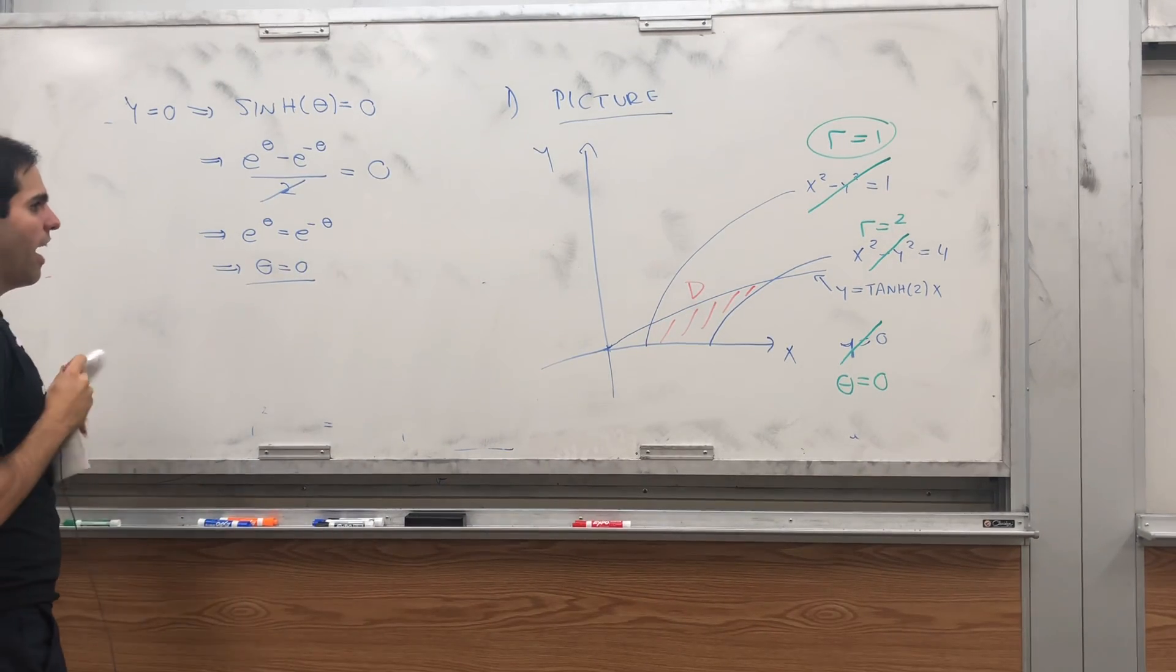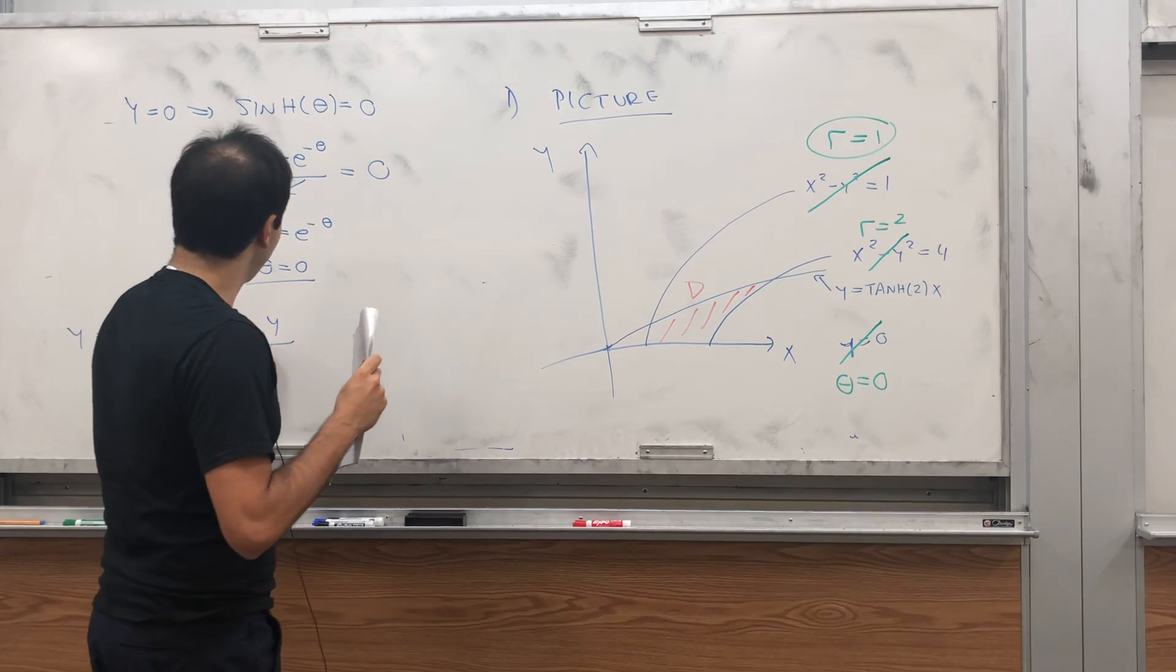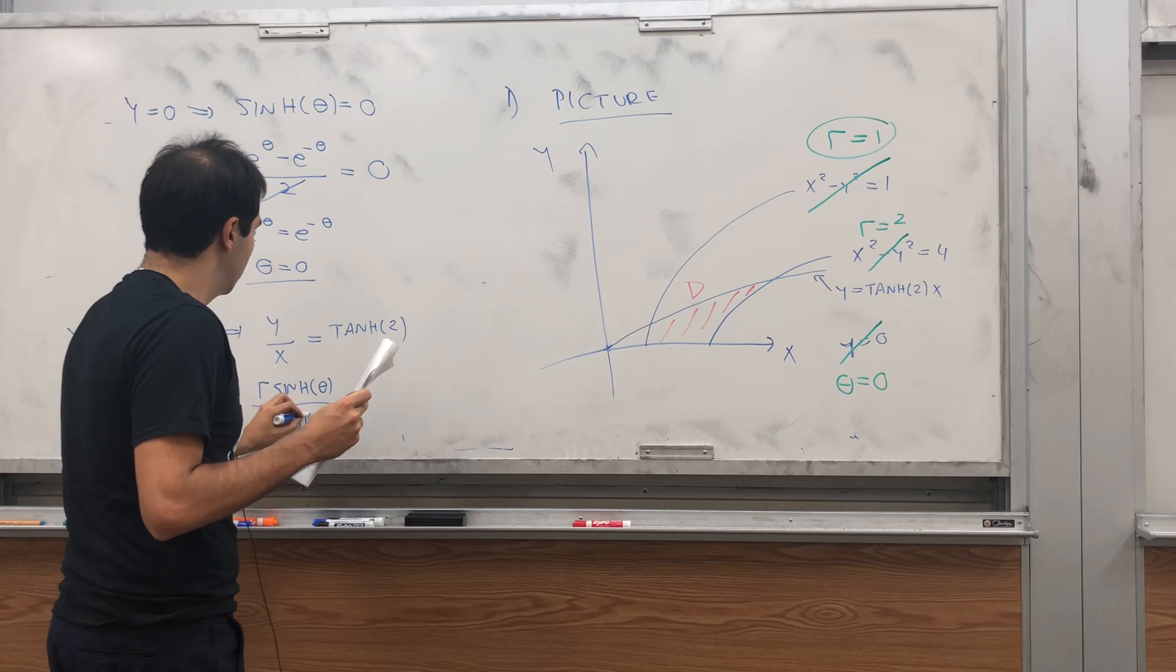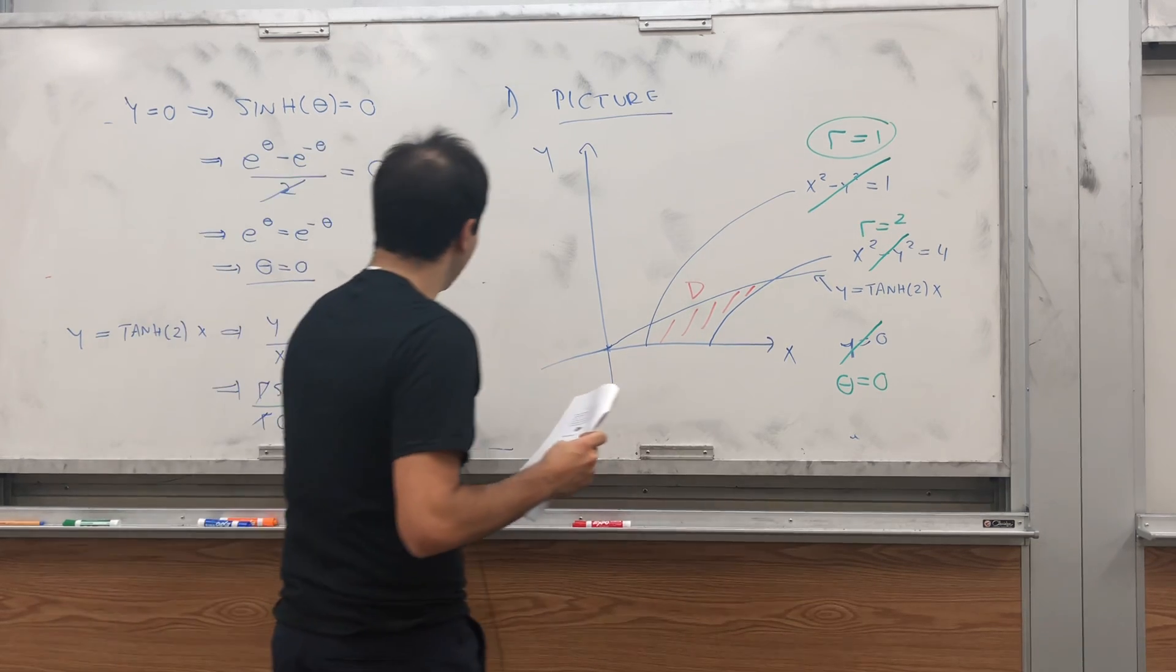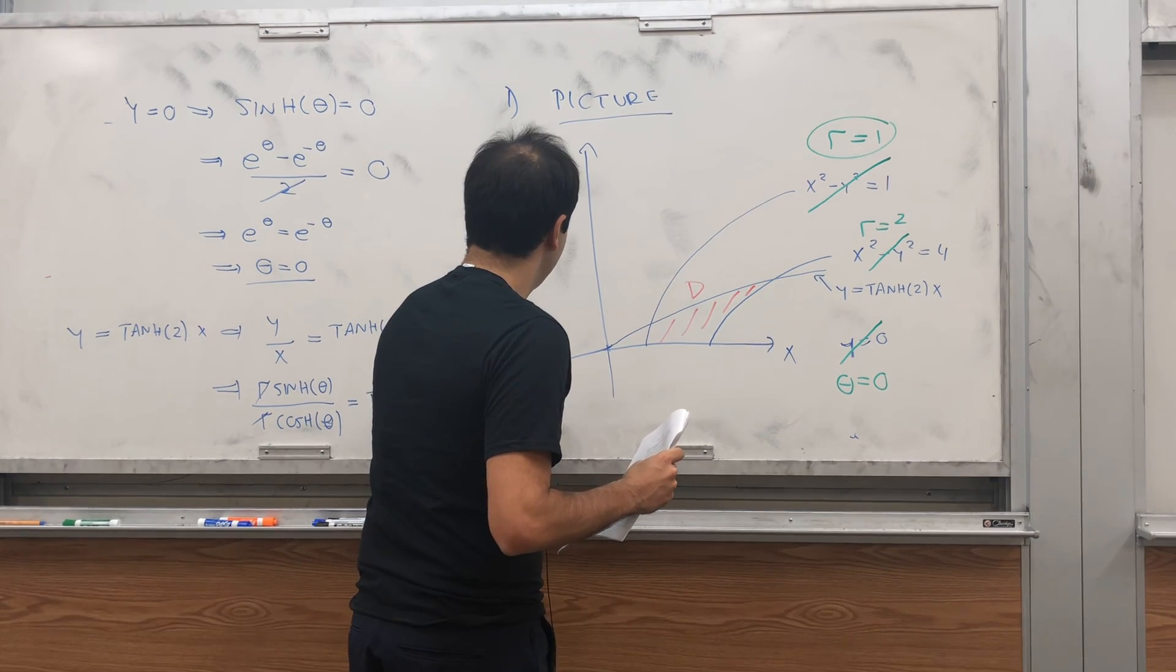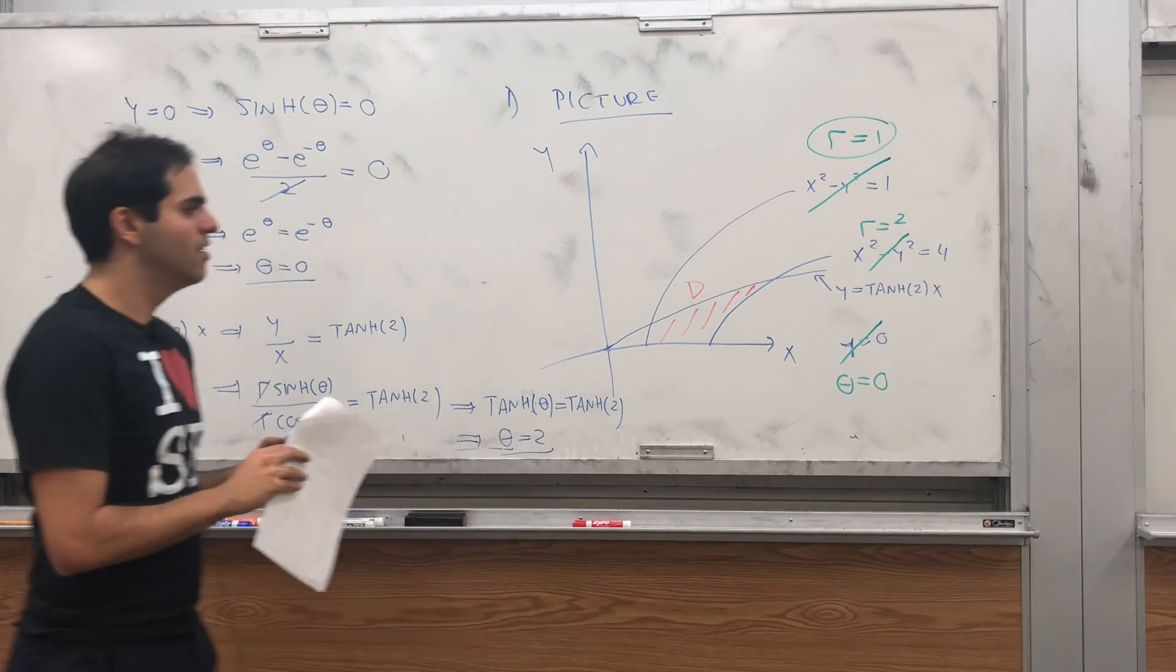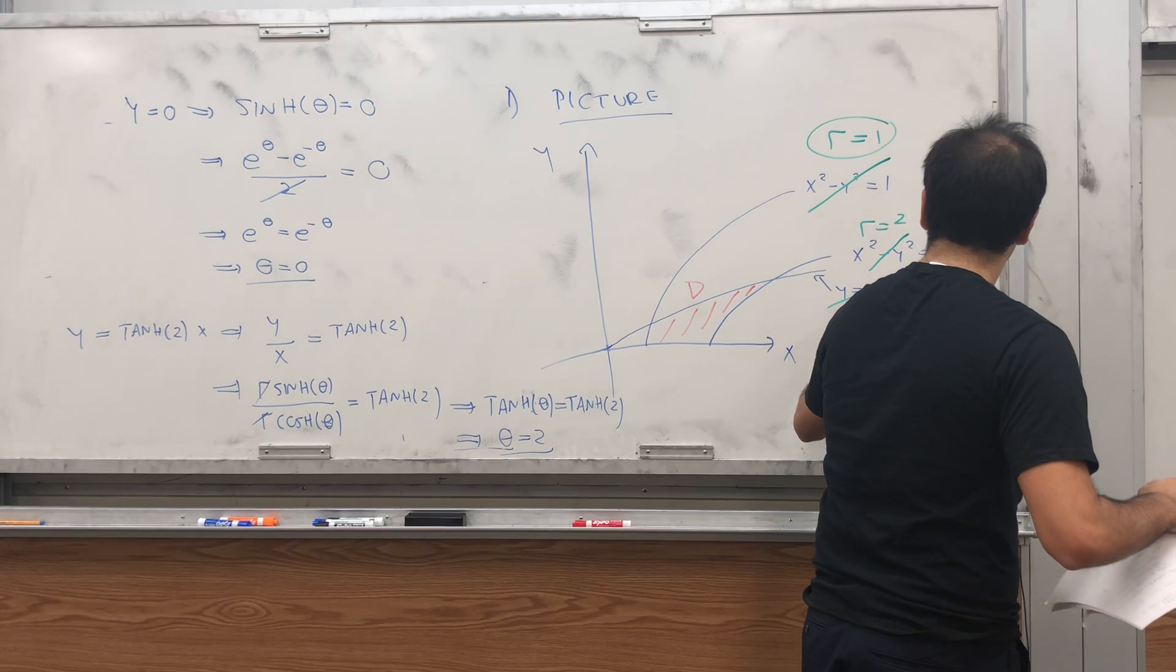Last but not least, y equals to tanh of 2x. That gives you y over x equals to tanh of 2. So, r sinh of theta over r cosh of theta equals to tanh of 2. You cancel this out and you get tanh of theta and you can show that tanh is 1 to 1. So, in fact, this implies that theta equals to 2. So, this weird line, y equals to tanh 2 of x because it just becomes theta equals to 2.